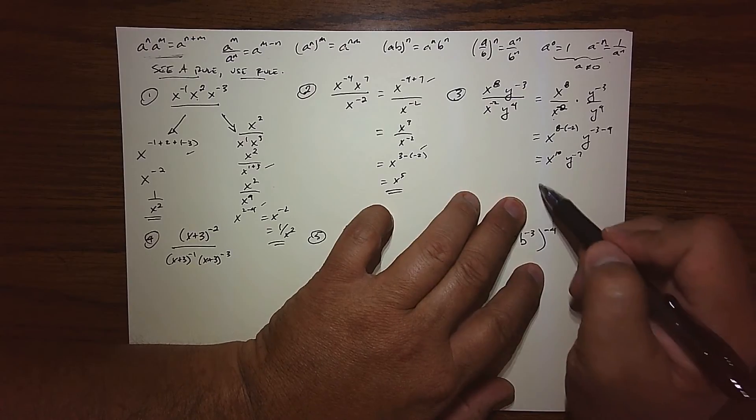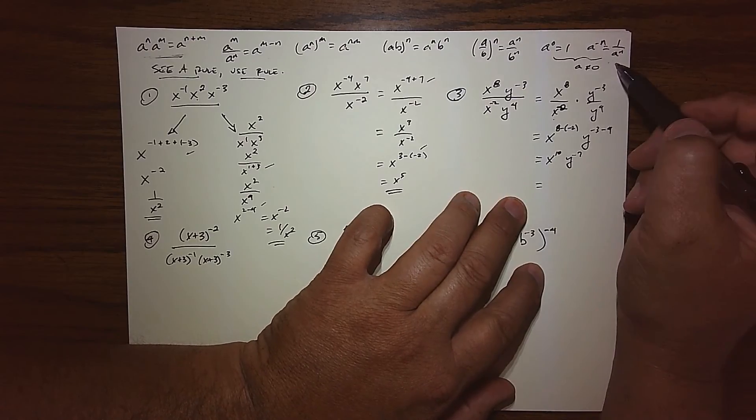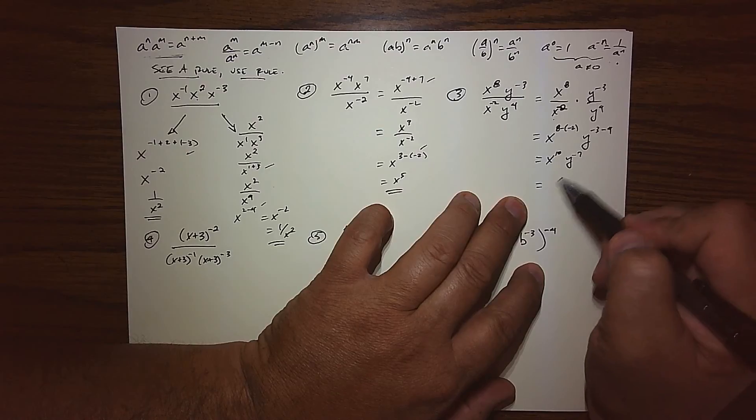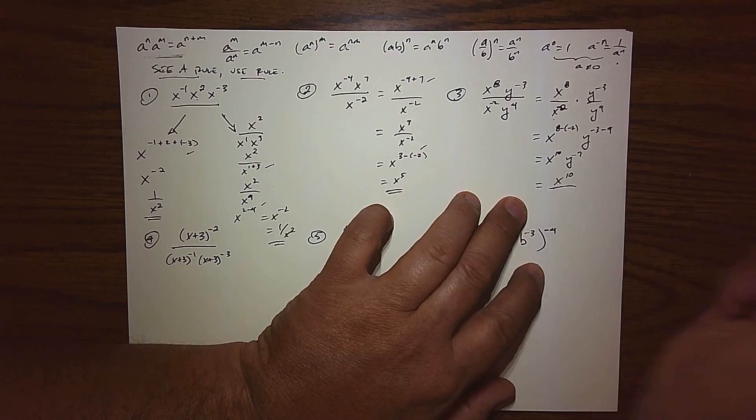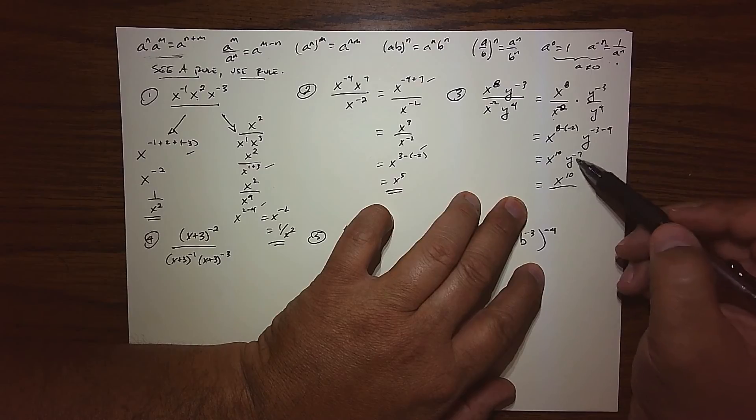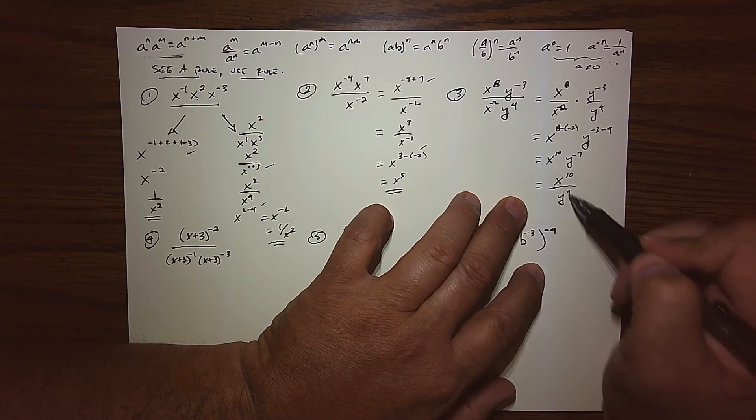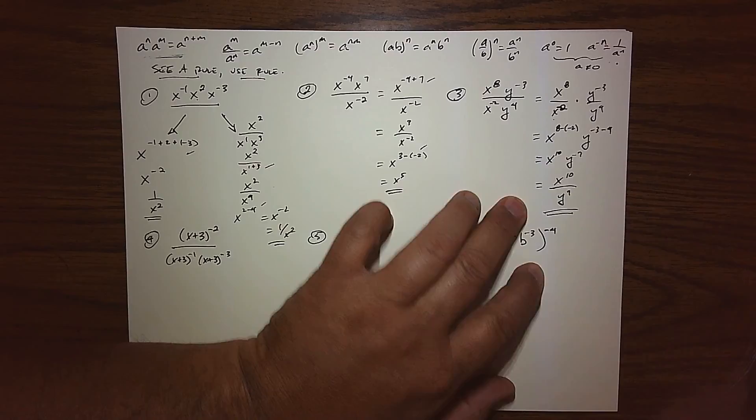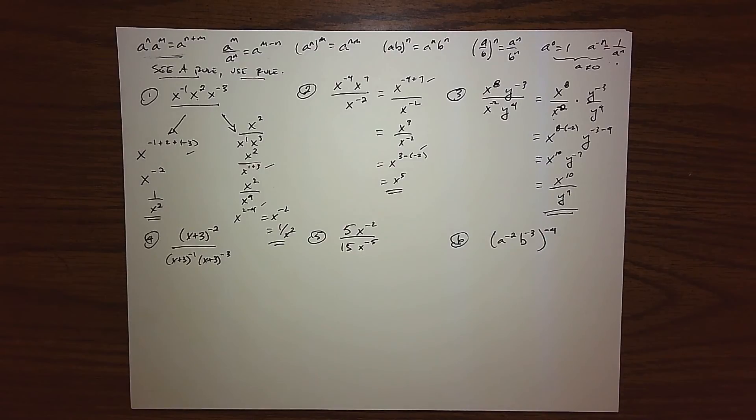And so the last thing I will do now is apply my negative exponent rule. So x to the tenth is nice and positive, so it stays put. Y to the negative 7, well, that's to a negative power. So by rule, it drops down to the denominator. So there's the simplification of number 3.